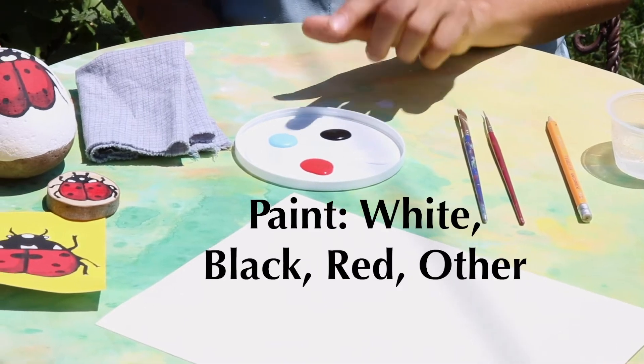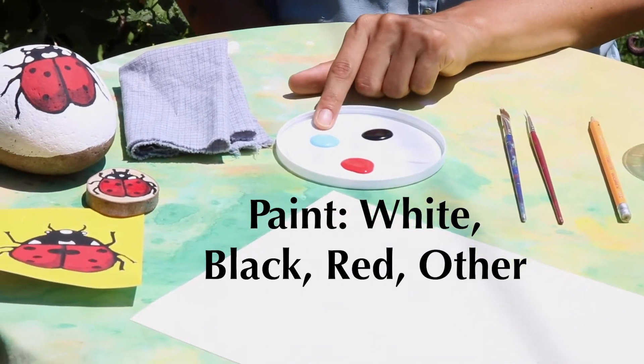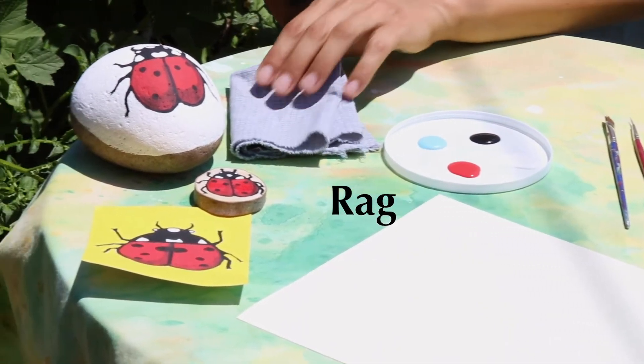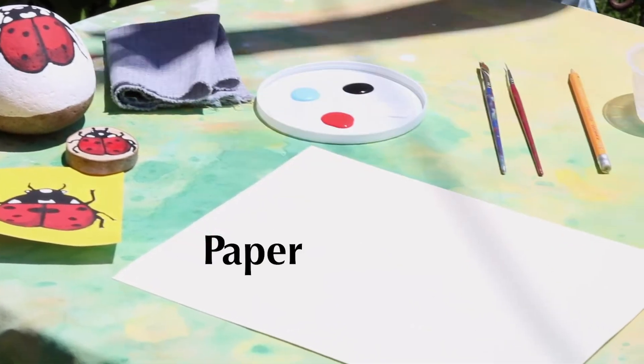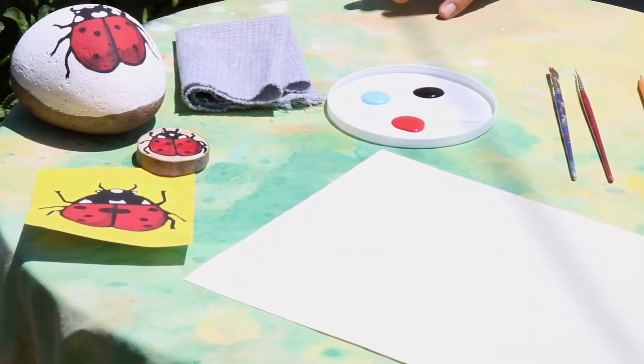Then you'll need white, black, red, and whatever color you want for the background, plus a rag to wipe your brush off in between colors. You also need paper or rock or wood, whatever you're going to be painting.